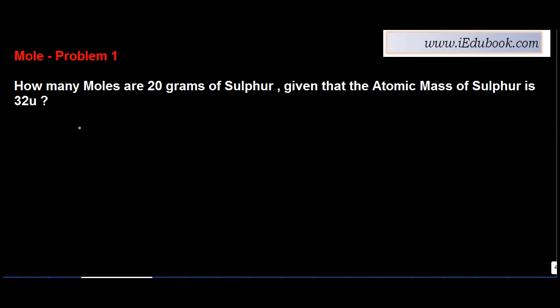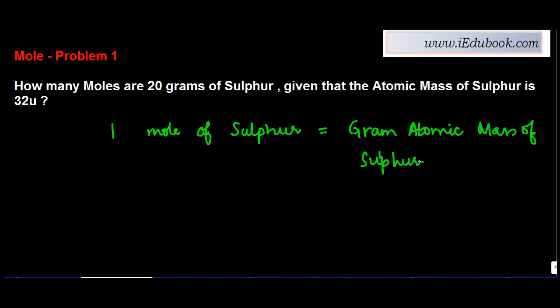How many moles are 20 grams of sulphur, given that the atomic mass of sulphur is 32u? Now we know that one mole of sulphur is equal to the gram atomic mass of sulphur.